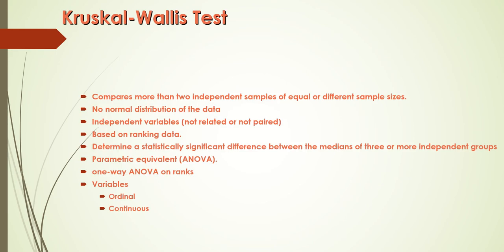A brief description of what the Kruskal-Wallis test is: the test is used to compare more than two independent groups. If you have more than two groups and the groups are independent — not paired, not related — whether they are equal size or different size, then Kruskal-Wallis test is the one to use, especially if the data are not normally distributed in one or more of the groups.